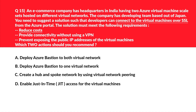The next question requires preventing exposure of public IP addresses, so Azure Bastion must be part of the answer. Options A and B both mention Azure Bastion but contradict each other. Option A says deploy Azure Bastion to both virtual networks — this would increase cost rather than reduce it, and the requirement says reduce cost. Option B says deploy Azure Bastion to only one virtual network, which meets the cost requirement, so we keep option B.